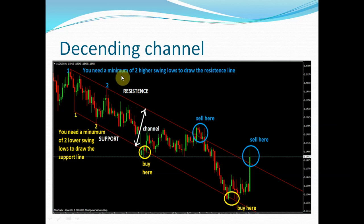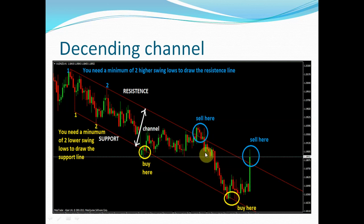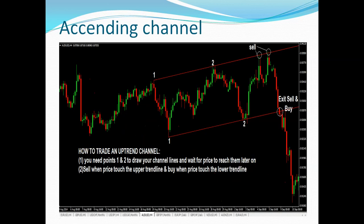You need a minimum of two higher swing lows to draw the resistance line, and similarly two lower swing lows to draw the support line. In the descending channel, the stock trades between the range. When it comes to the resistance, you get a confirmation bearish candle and you can short it. When it comes to support and you get a bullish candle, you can buy. After that, three candles later near resistance, you can sell.